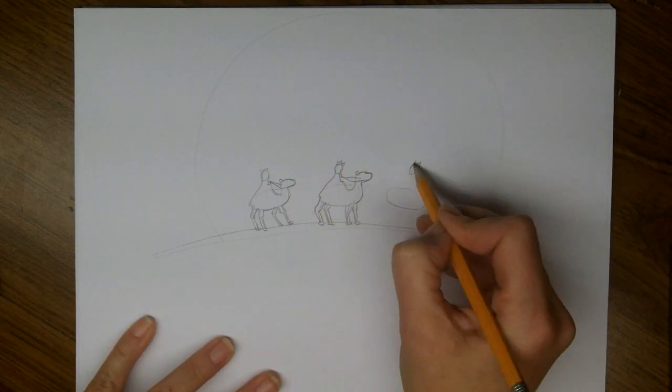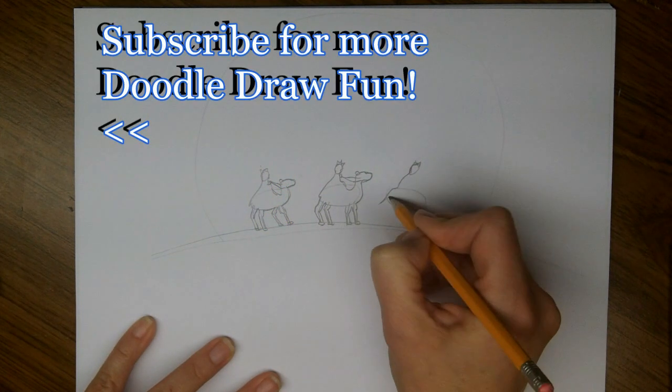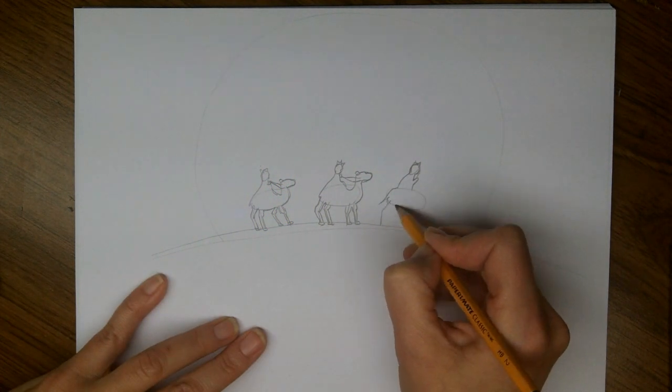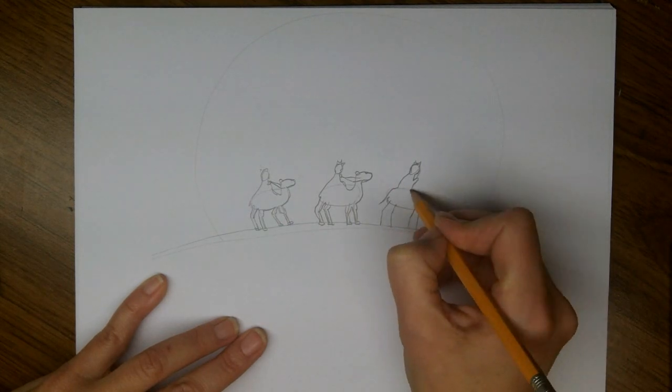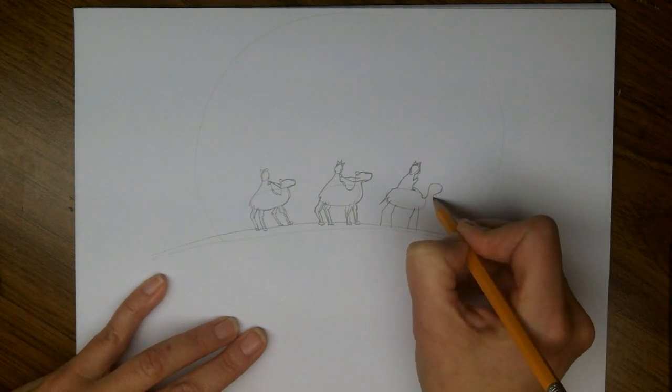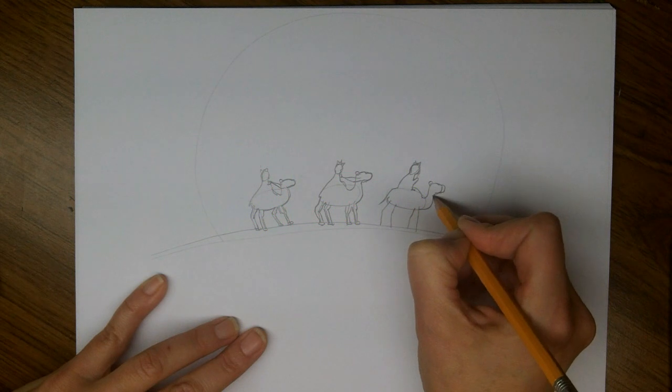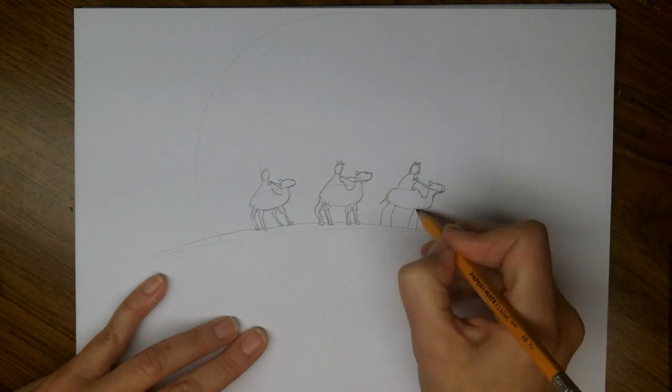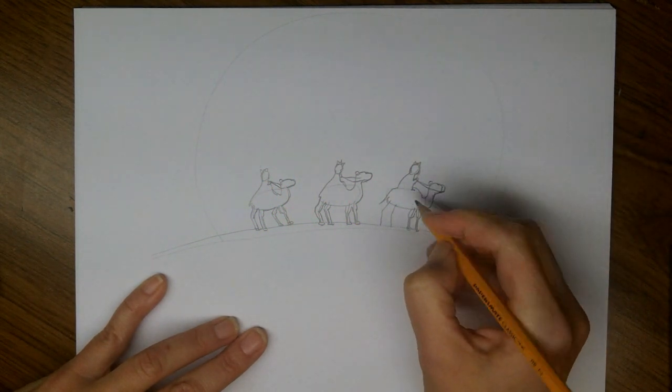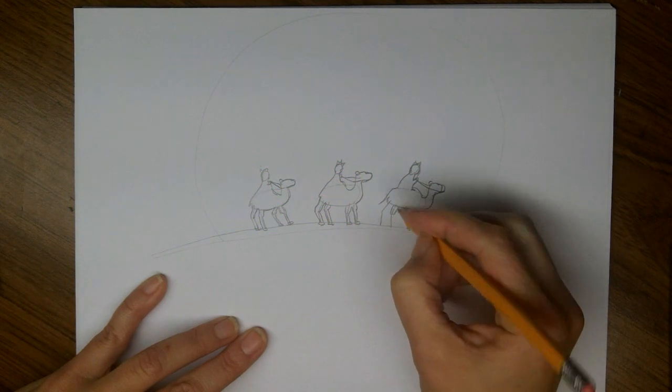And the last one, head and crown, cloak, and hand, legs, and head, ear, and reins. Thicker top, thinner bottom. Same every time.